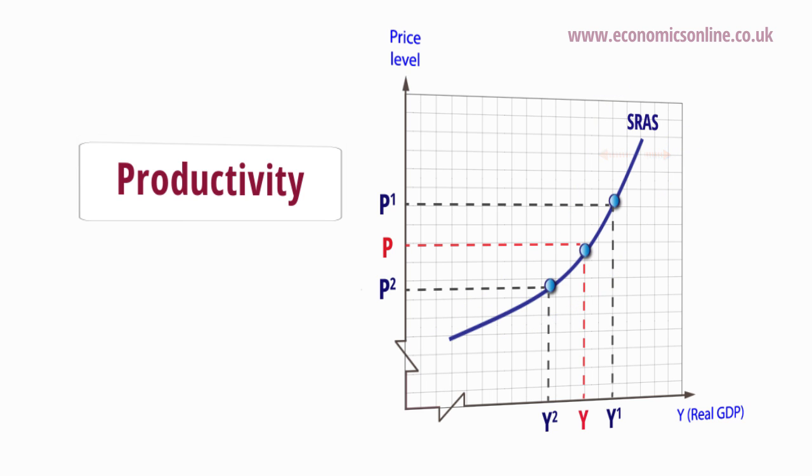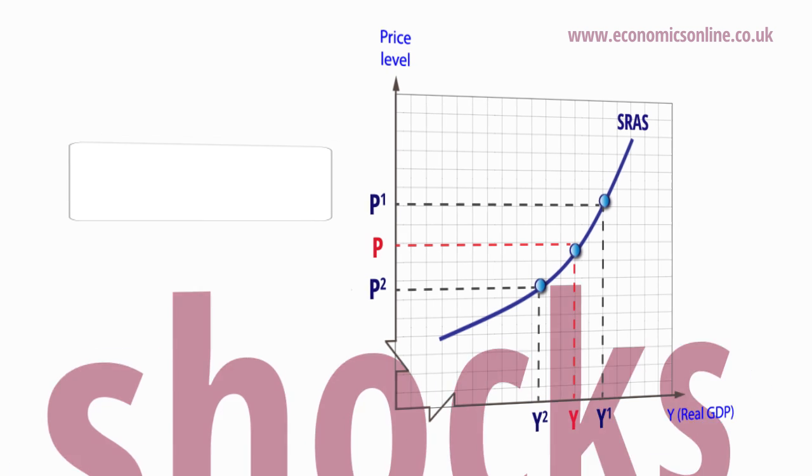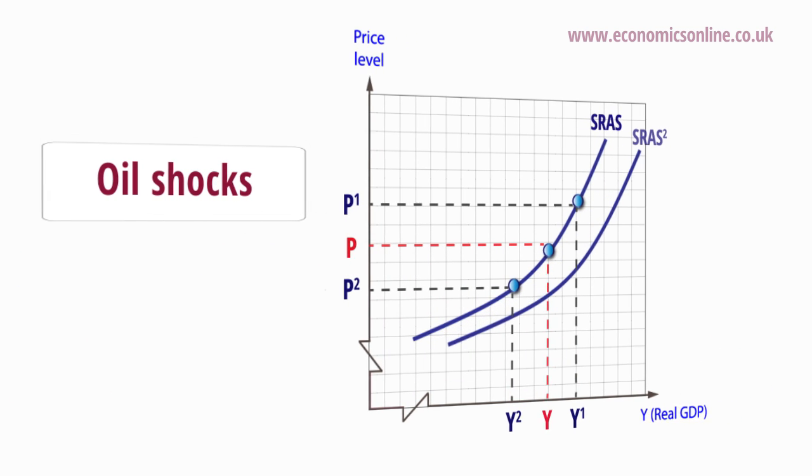Finally, unexpected changes in supply conditions, called supply shocks, can cause fluctuations in the SRAS curve. For example, a sudden fall in oil or commodity prices will push SRAS to the right.